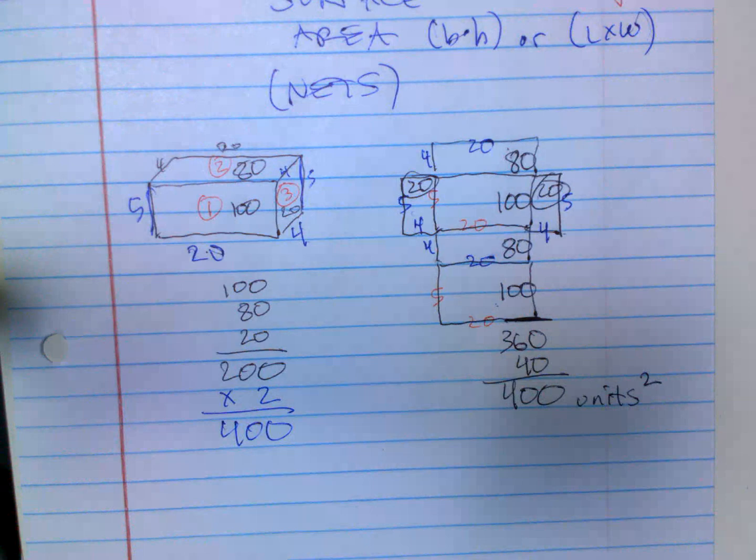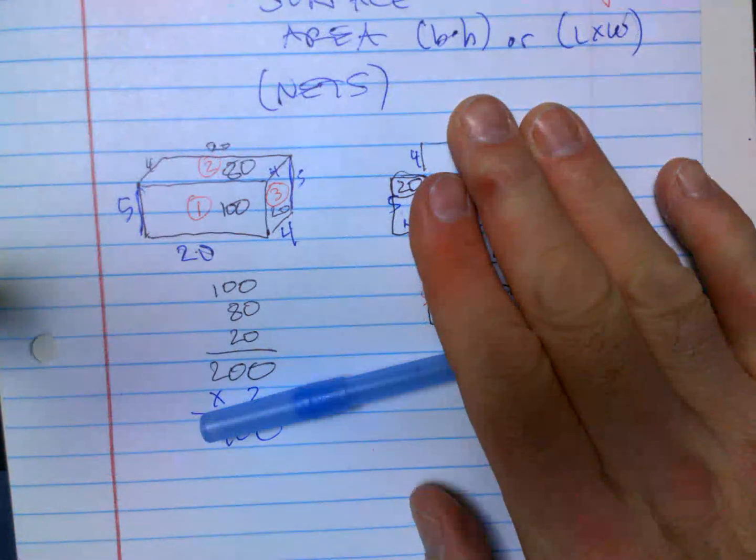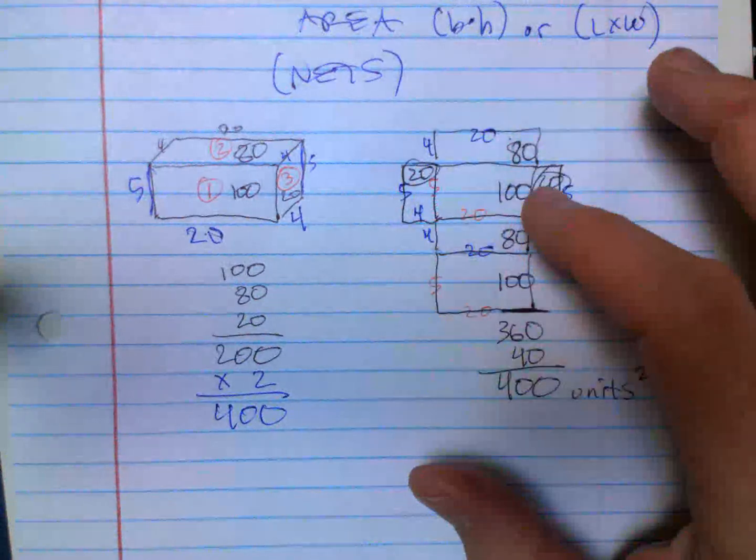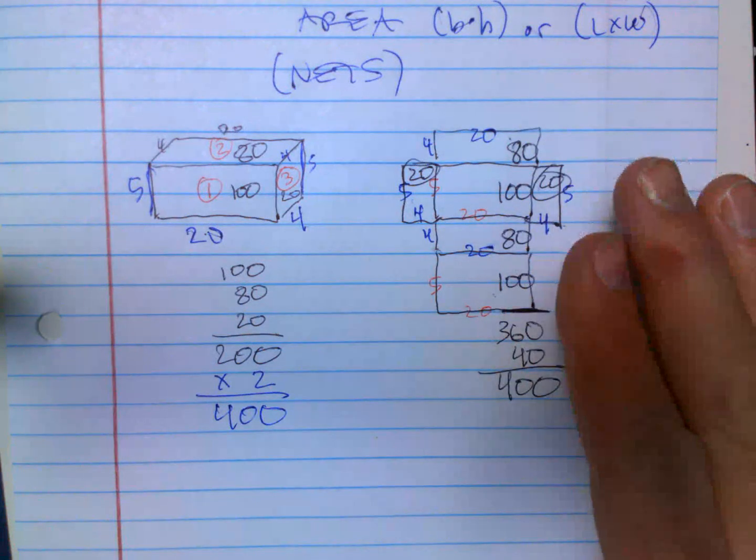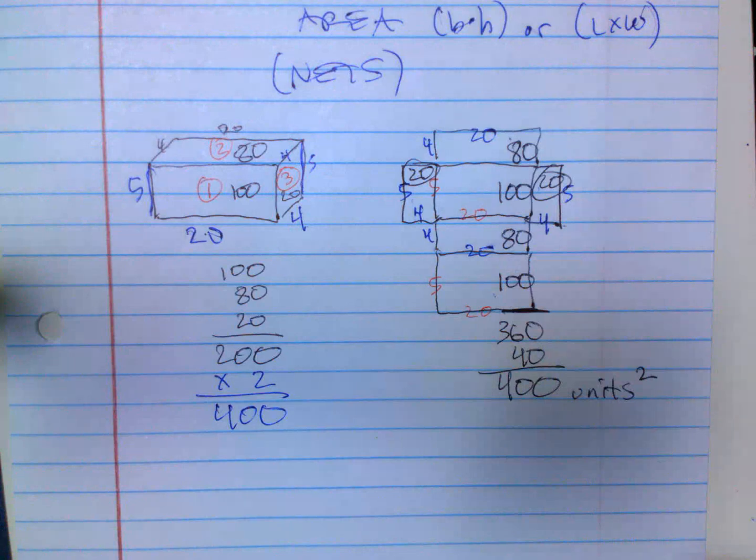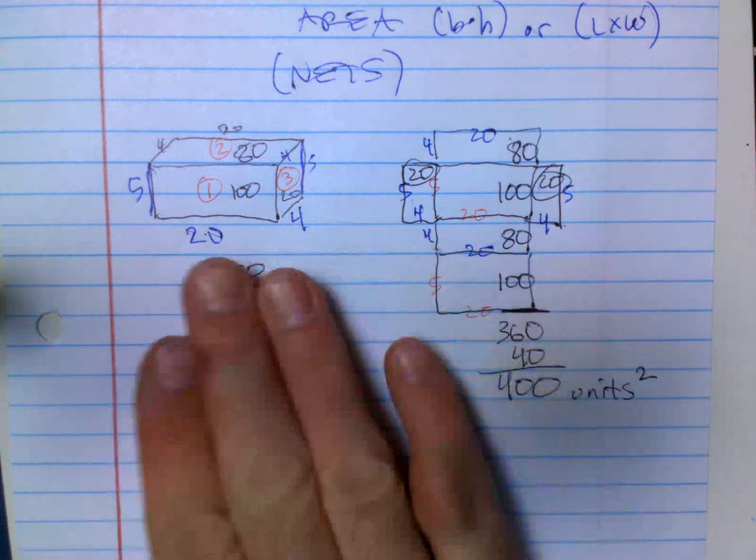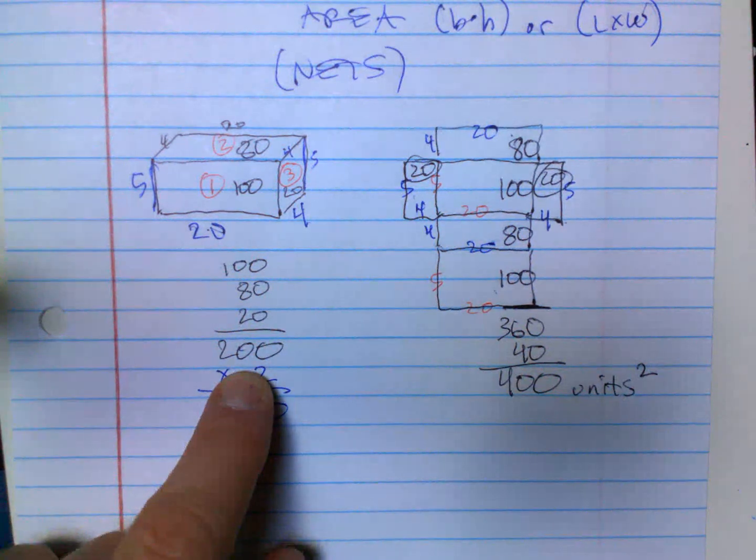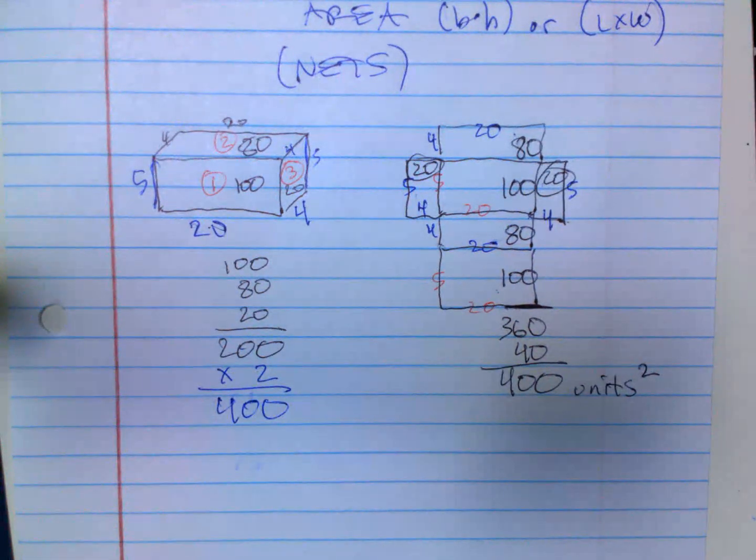Which did you think was easier? Because they don't give you this net all the time, guys. If they don't give you the net, you're going to have to draw it, and some people make mistakes drawing it and putting the numbers in the wrong places. So it's easier just to do the area of this side, this side, and this side, and then add them together and times 2 for the sides you can't see.